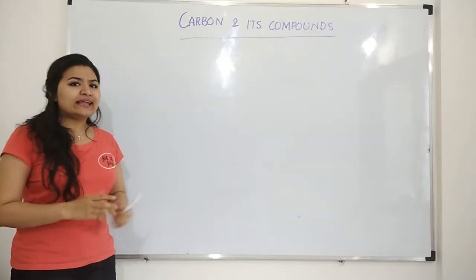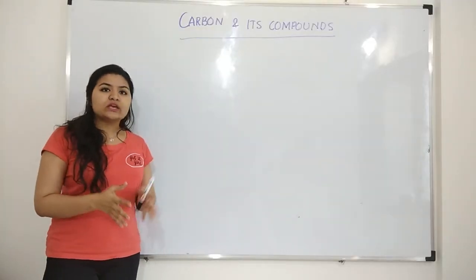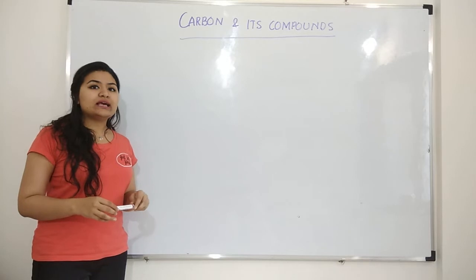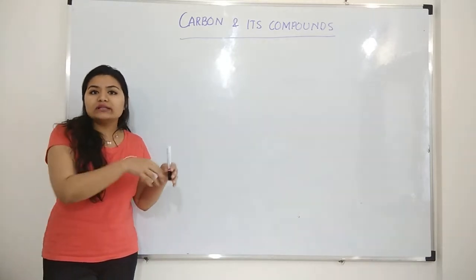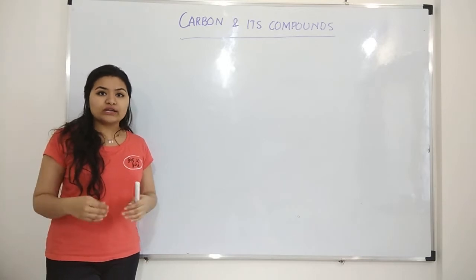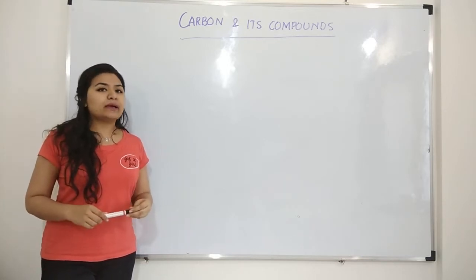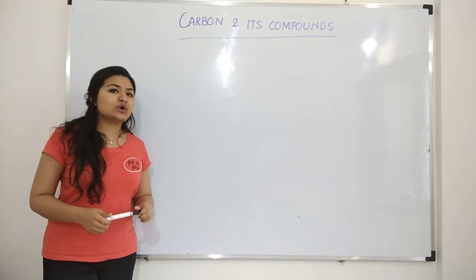Now first of all let us get to know carbon a little. Now carbon in your periodic table is the sixth element and you should know that in the periodic table all the elements are placed according to their atomic number. If you remember 9th grade concepts then you should know what is atomic number.